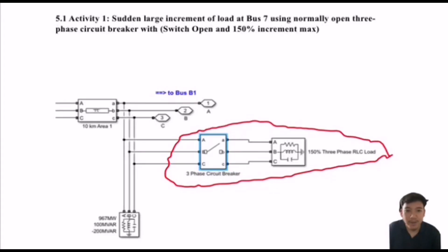Assalamualaikum warahmatullahi wabarakatuh. My name is Muhammad Ziaris bin Nazari, my normatrik is DE20067. I will present for bus 7. We will see the sudden large increment at load at bus 7 using a normally open 3-phase circuit breaker with switch open and 150% increment max. The load connection at bus 7 is connected to a 3-phase circuit breaker in parallel to an RLC load. The function of the 3-phase circuit breaker is to open and close.